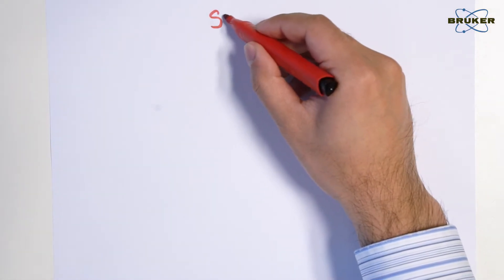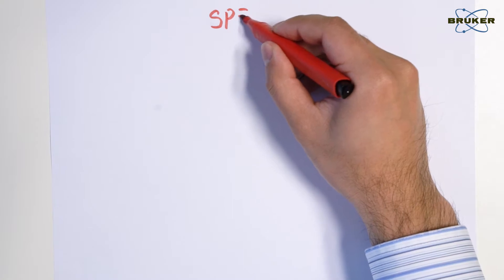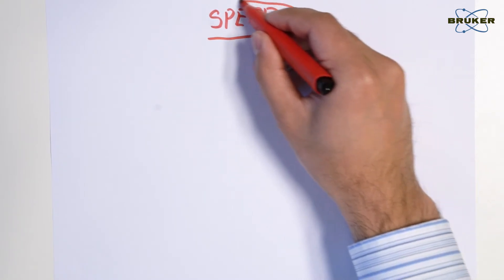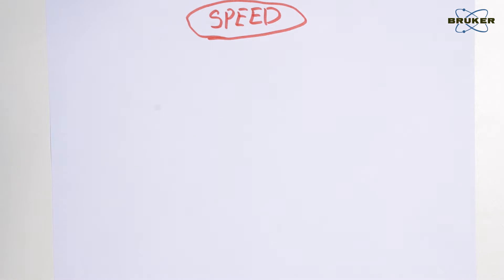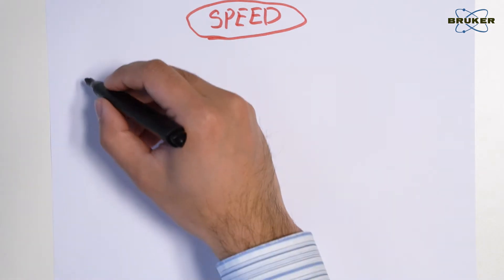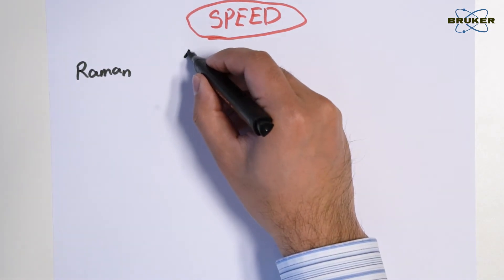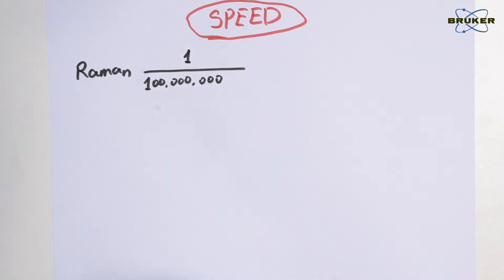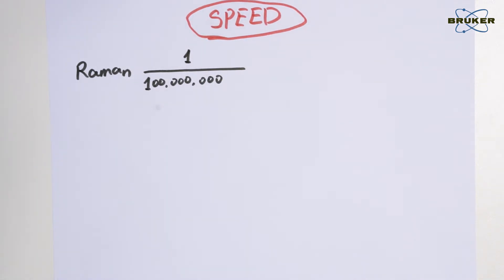But is that all? Of course not. Raman microscopy in theory works for any sample that has a Raman signal. However, today's application of Raman imaging is mainly limited by the speed. By now, we all know that Raman scattering is a weak process. As a result, Raman imaging is much slower than other imaging techniques like, for instance, fluorescence microscopy.